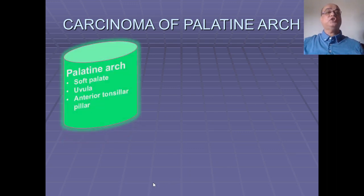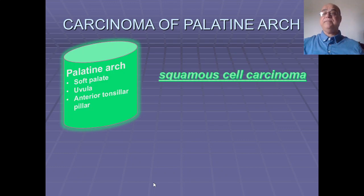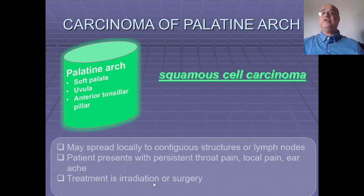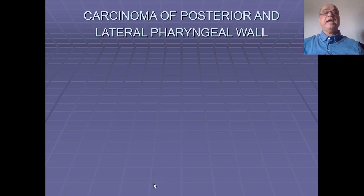The palatine arch includes the soft palate, uvula, and anterior pillars. Early tumors here present with red lesions with ill-defined borders; squamous cell carcinoma is most common. Spread occurs first to the tonsillar pillar and hard palate; lateral spread may penetrate the superior constrictor muscle and skull base, and may rarely involve cranial nerves in the parapharyngeal space or the lateral wall of the nasopharynx in advanced cases. Treatment is irradiation or surgery.